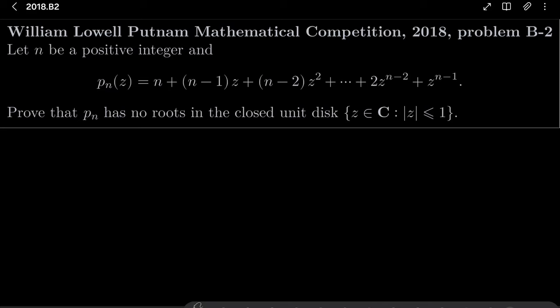Hello friends. In this video I'd like to solve the following problem from the William Lowell Putnam Mathematical Competition 2018, problem B2. Let n be a positive integer and consider the polynomial p_n(z) = n + (n-1)z + (n-2)z² + ... + 2z^(n-2) + z^(n-1). We wish to prove that this polynomial p_n has no complex roots in the closed unit disk, meaning the set of all complex numbers z such that |z| ≤ 1.